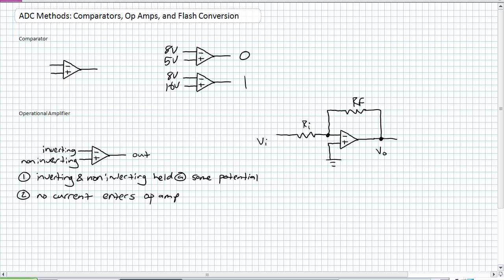It's very simple. It has two inputs, an inverting input signified by the negative, a non-inverting input signified by the positive, and a single output. There are two characteristics about an operational amplifier. The first magical property is the inverting and non-inverting inputs are being held at the same potential. And number two, no current can enter the operational amplifier. It's extremely high impedance.